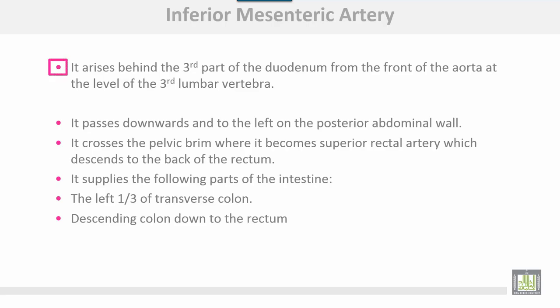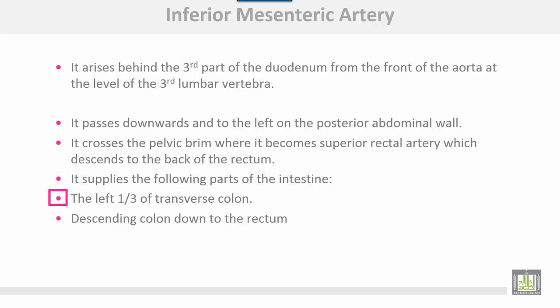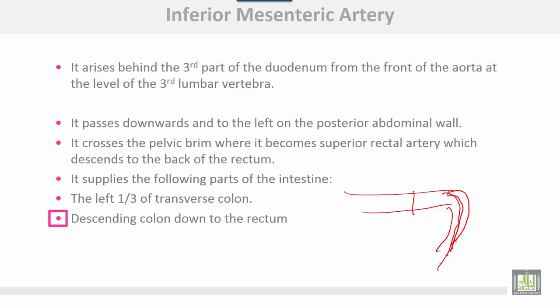The inferior mesenteric artery arises behind the third part of the duodenum from the front of the aorta at the level of the third lumbar vertebra. It passes downwards and to the left on the posterior abdominal wall. It crosses the pelvic brim where it becomes the superior rectal artery, which descends to the back of the rectum. It supplies the left third of the transverse colon, the descending colon, and down to the rectum.